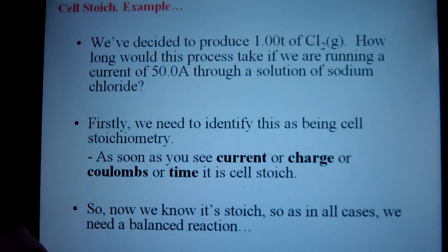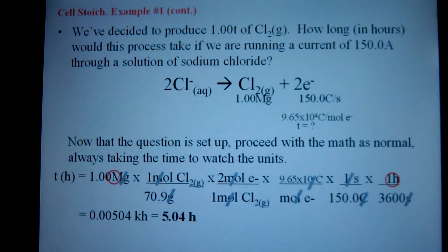We've decided to produce a ton of chlorine gas. We want to know how long it's going to take to do this using a current of 150 amps through a solution of sodium chloride. Well, as I mentioned, you'll need a half reaction.